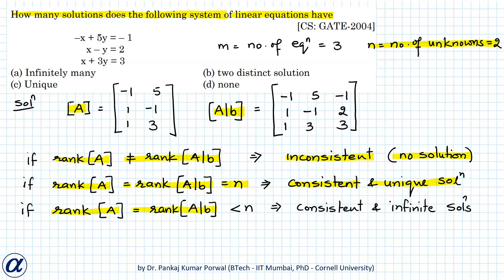If rank of A equals rank of the augmented matrix and that is less than n (number of unknowns), the system is consistent and has infinite solutions. If you want to know in more detail how we get these conditions, you can watch my video on advanced concepts in systems of linear equations.